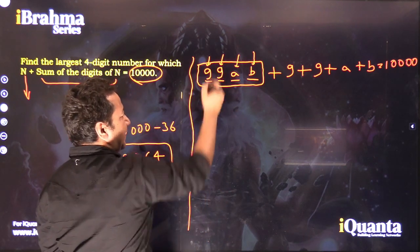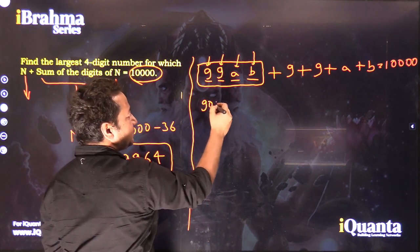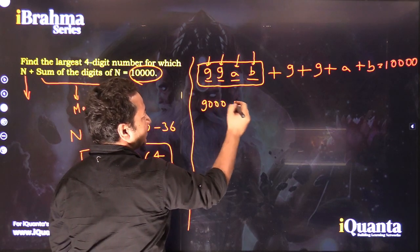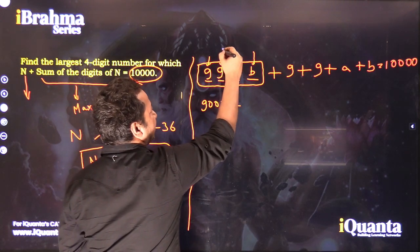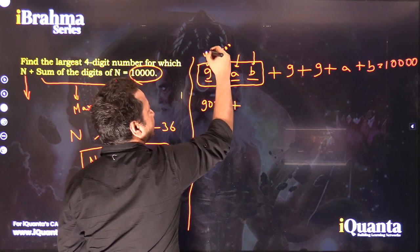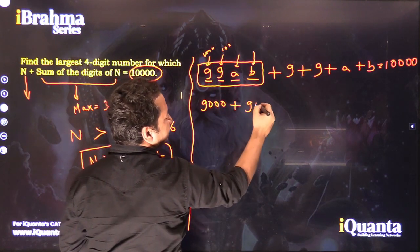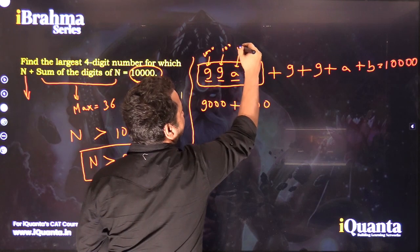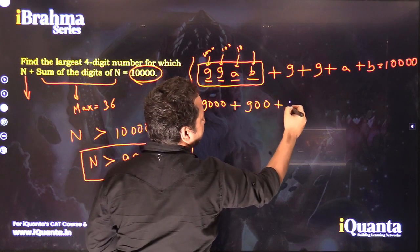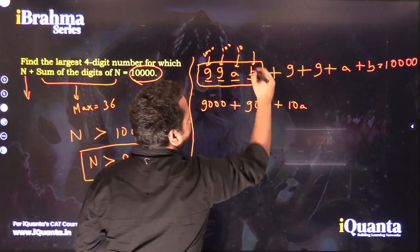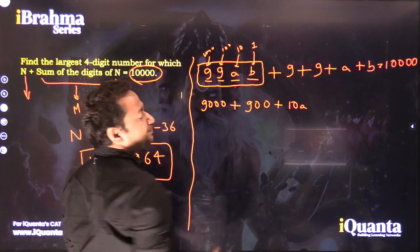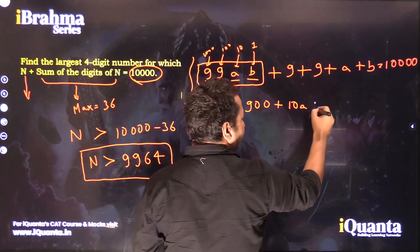If I expand it, I get 9 × 1000 = 9000, plus 9 × 100 = 900, plus 10 × A = 10A, and then 1 × B = B.